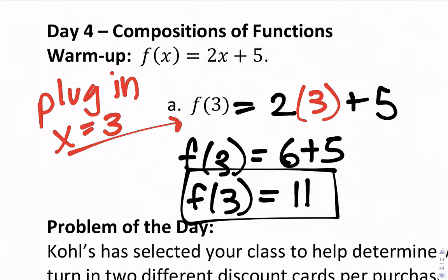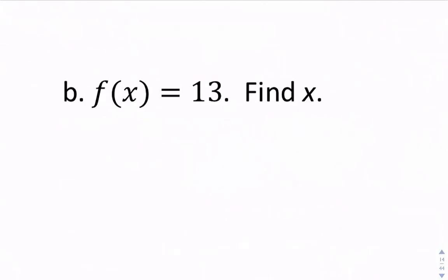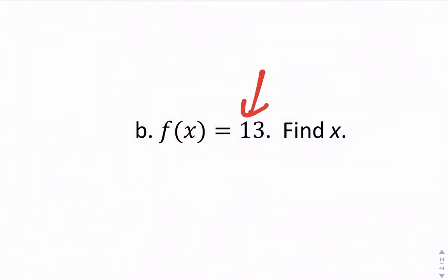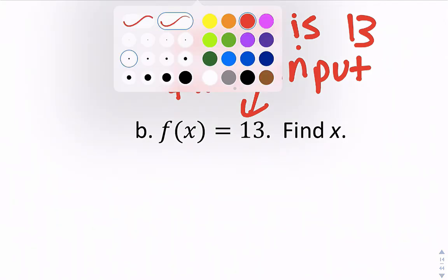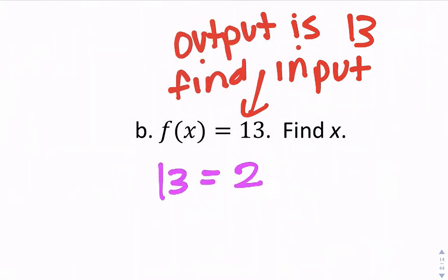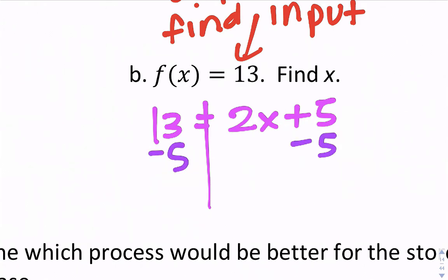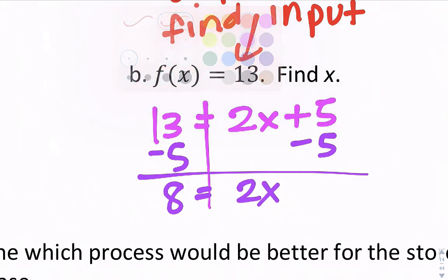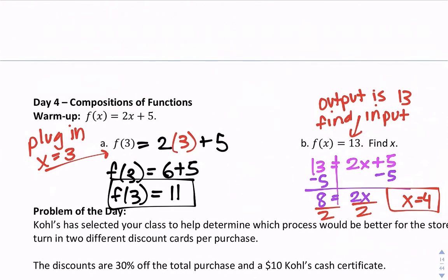With function notation, for every input there's one output — when you input 3, the output is 11. Now this next part is slightly different: the output is 13, find the input. So we say 13 = 2x + 5, subtract 5 from each side to get 8 = 2x, divide by 2, and we get x = 4.